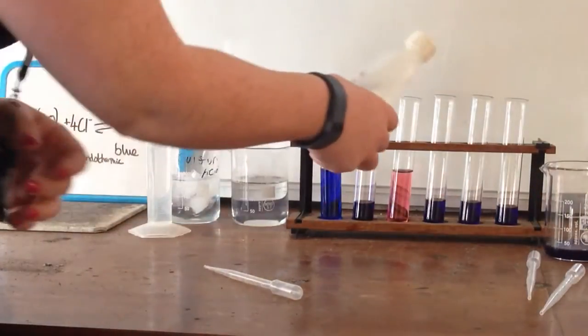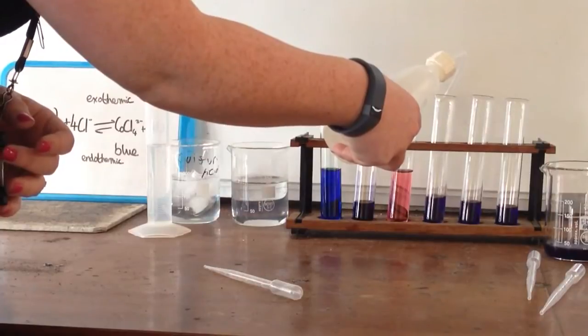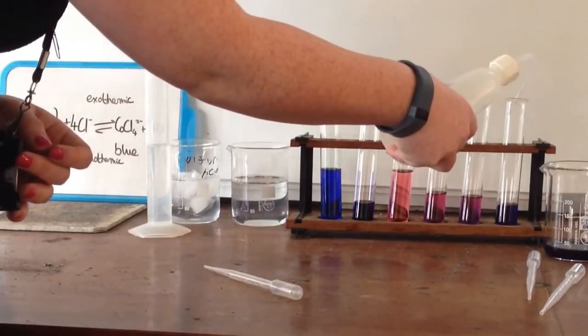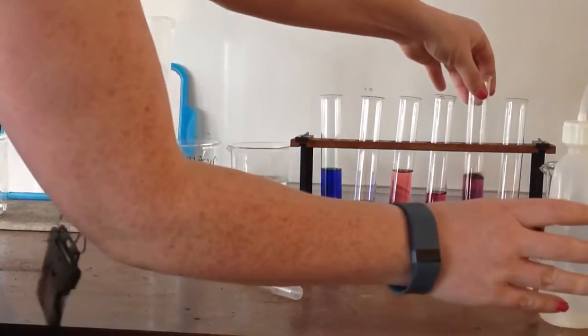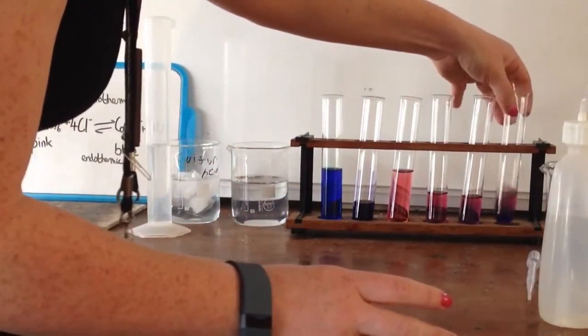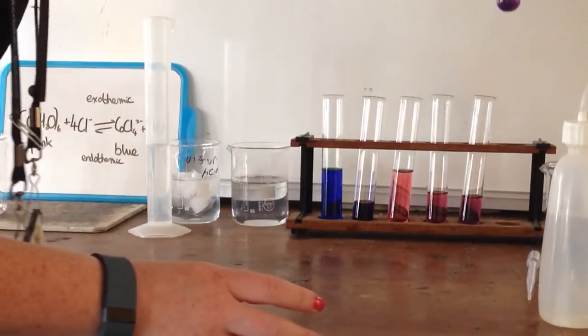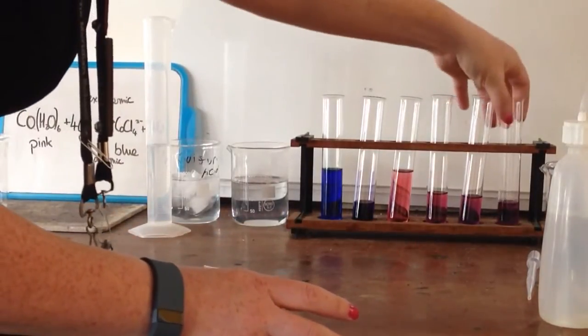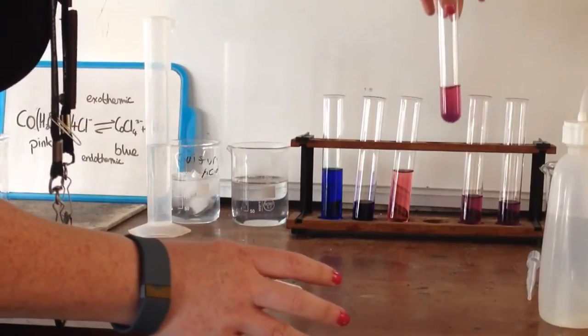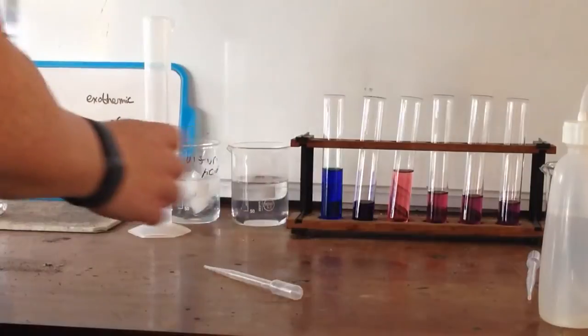So I'm just going to add a bit of water to these three here to get them back to a kind of intermediate stage. So there are violets and not that blue. So you can see this is quite nice violet.